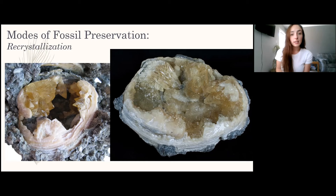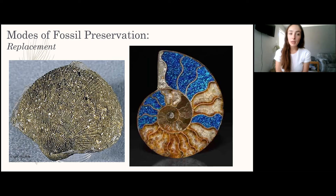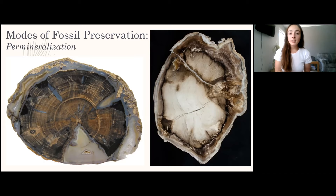Replacement can be done by pyrite replacing aragonite or calcite, which is called pyritization. You can also have opalization, which is a type of replacement — you can see the opal replacing the original carbonate material in this ammonite.